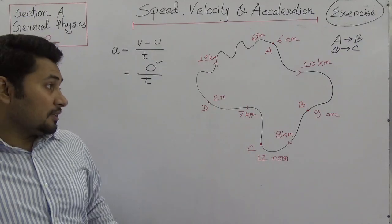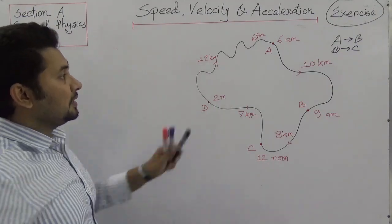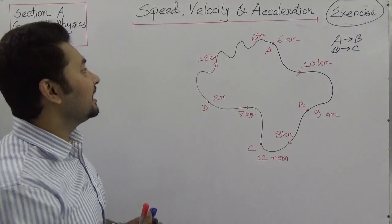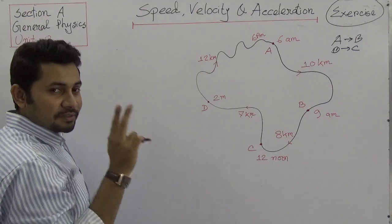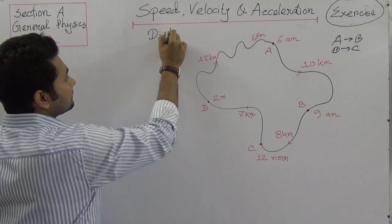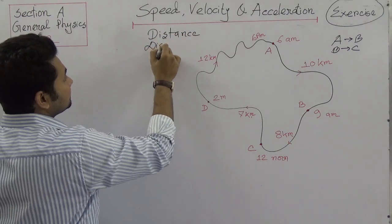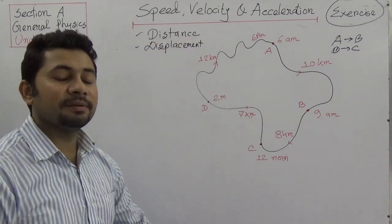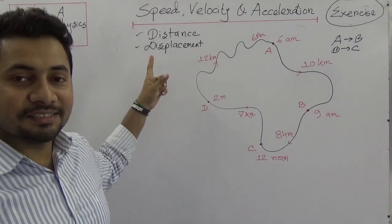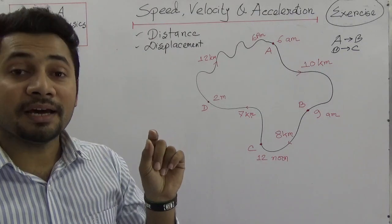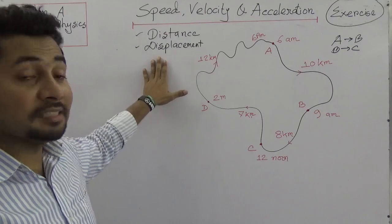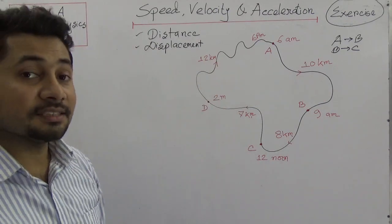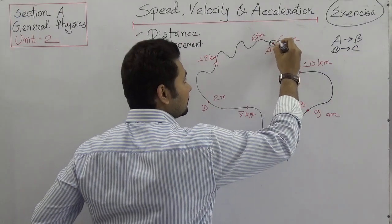Now this is the cyclist's route. We need to find the average speed of the cyclist, and the route is given. We also know that in scalar and vector quantities, there are two things: distance and displacement. Distance is a scalar quantity — it has only magnitude and no direction. In the case of displacement, there is both magnitude and direction. Here the cyclist is moving from A to B.